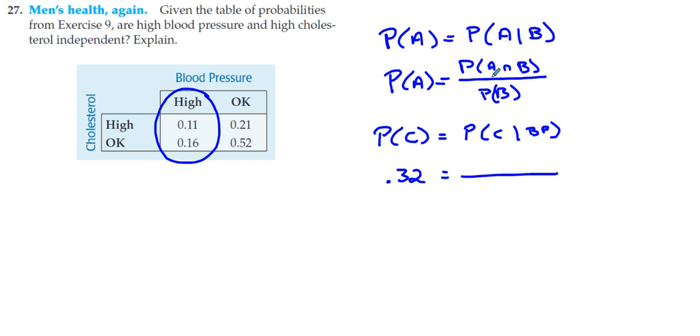So the probability of both, the probability that they have both high blood pressure and high cholesterol is 0.11. The probability that they have high blood pressure is 0.27. We're going to just do that math, 11 divided by 27.